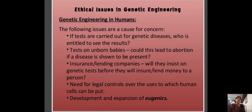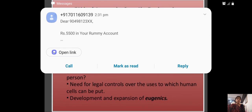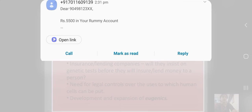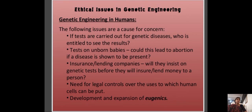Ethical issues in genetic engineering in humans include the following concerns: who is entitled to see the results of genetic disease tests; tests on unborn babies could lead to abortion if the disease is shown to be present; insurance companies may insist on genetic tests before lending money; and the need for legal controls over the uses of human cells, including the development and expansion of eugenics.